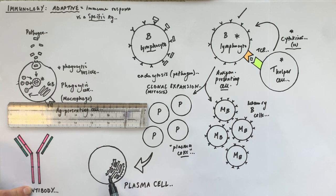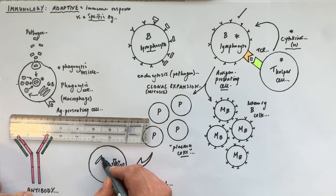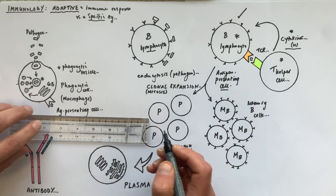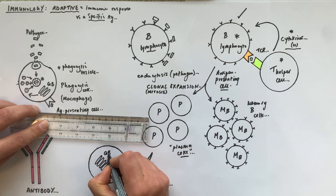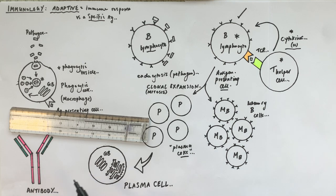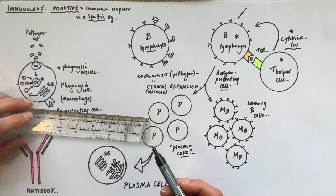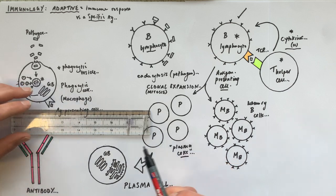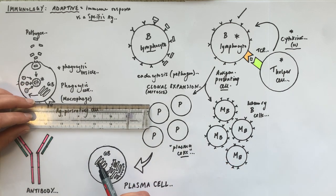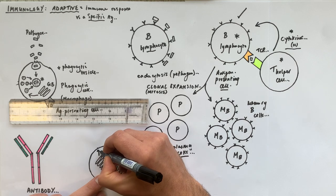The antibody proteins travel inside the cisternae of the rough endoplasmic reticulum, then vesicles pinch off and fuse with the Golgi body. Inside the cisternae of the Golgi body, proteins get modified — sugars may be added to form glycoproteins — and they get folded into their final tertiary and quaternary structures.